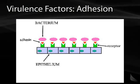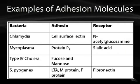The first virulence factor is adhesion — what a bacterium uses to attach to and stick to its target tissue. Bacteria have different proteins in their cell membrane which target receptors on host tissue. Examples of adhesion molecules include: Chlamydia, which uses cell surface lectin to bind to N-acetyl glucosamine; Mycoplasma, which uses protein P1 to bind to sialic acid; Type 4 cholera, which uses fucose and mannose; and Strep pyogenes, which uses LTA, the M protein, and the F protein to bind to fibronectin.